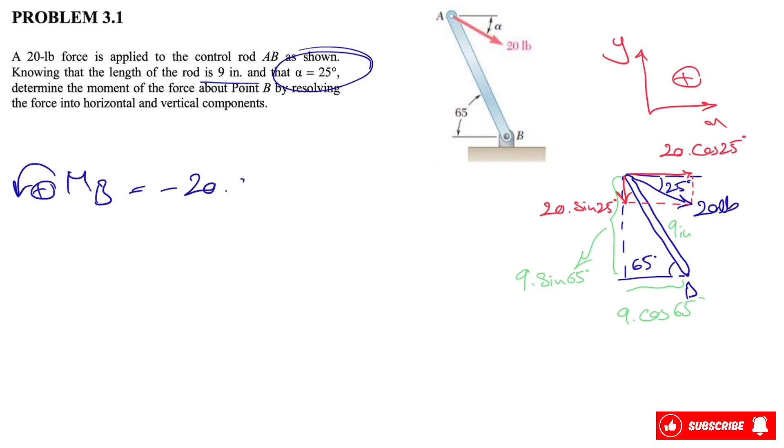We'll have negative, the force is 20 times cosine of 25 degrees, and the distance that we have will be the distance, or the vertical distance to the line of action of the force, which is what we have in here. So if we continue the distance from here, the vertical distance to the line of action will be 9 times sine of 65 degrees.